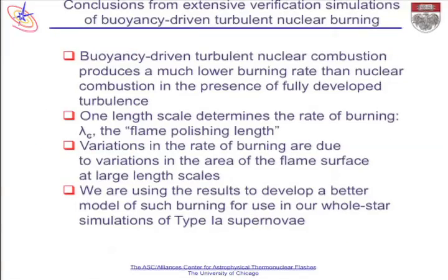From this process we've been able to learn many important things. It turns out that because of the turbulence and the complexity of the flame surface, it's not like Kolmogorov turbulence, so it's a much lower burning rate than people had estimated before. We also find that there's one and only one length scale that determines the rate of burning.